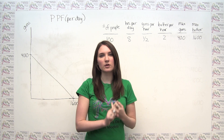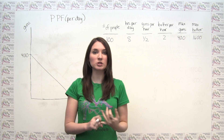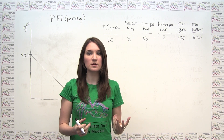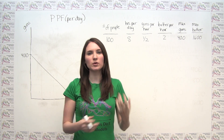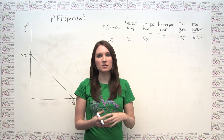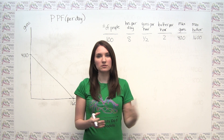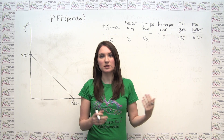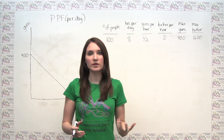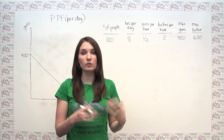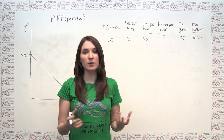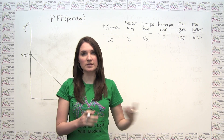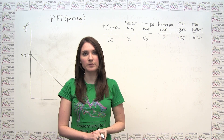Either the number of factors of production in our economy has increased. Factors of production are just things that go into the production process, such as labor, capital, etc. So if we had more labor or capital available, we're going to have more production possibilities than we had before.